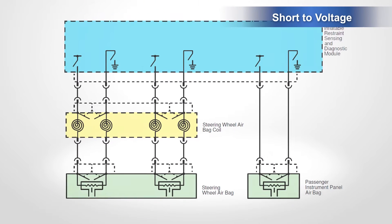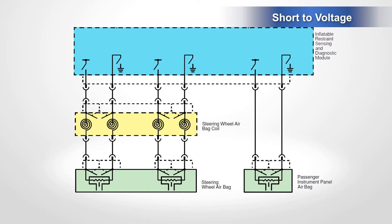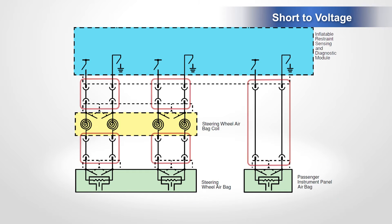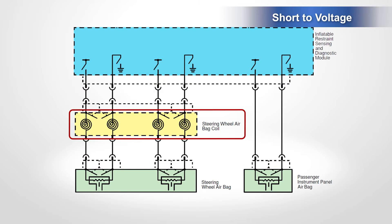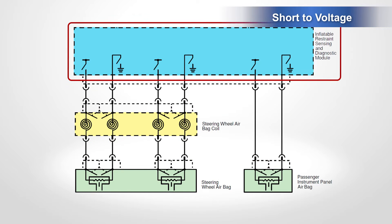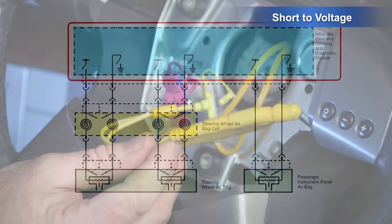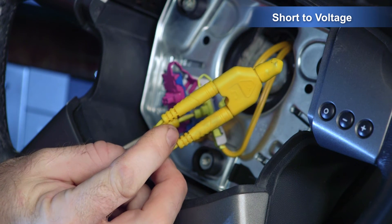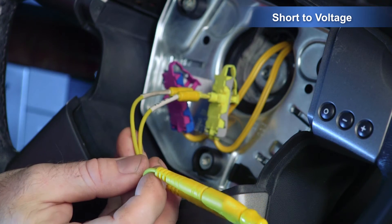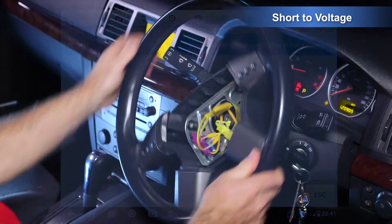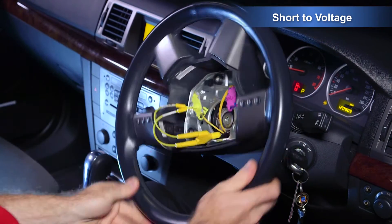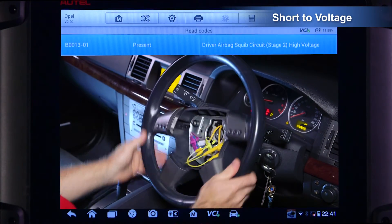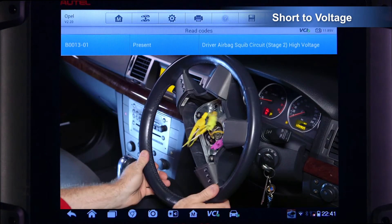We need to isolate the short-to-voltage to either the airbag, harness and connectors, clock spring, or the SRS control module. Insert an airbag simulator or dummy load in place of the airbag. Re-enable the SRS and rotate the steering wheel from lock to lock, then re-check the DTC status.